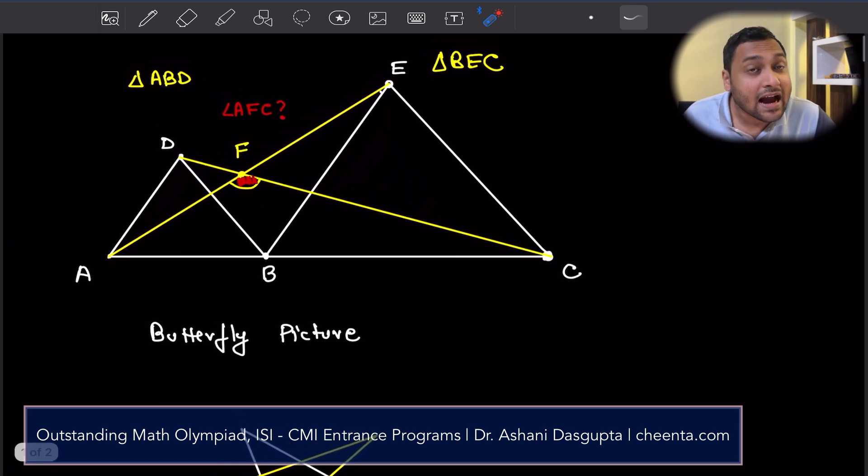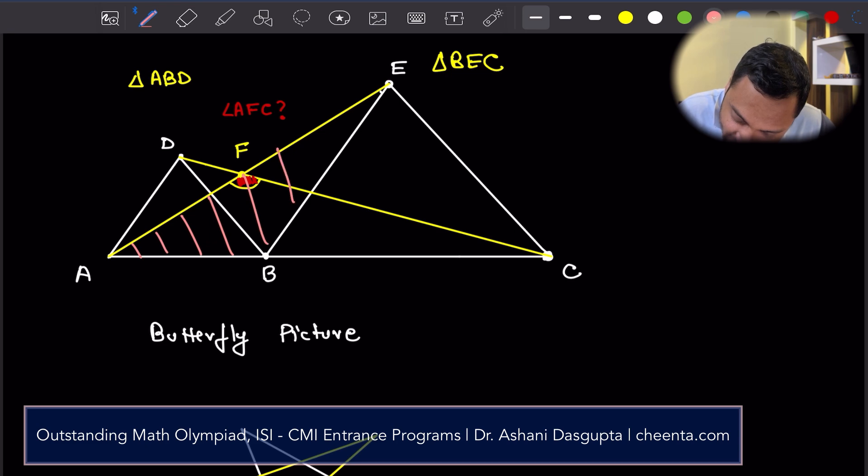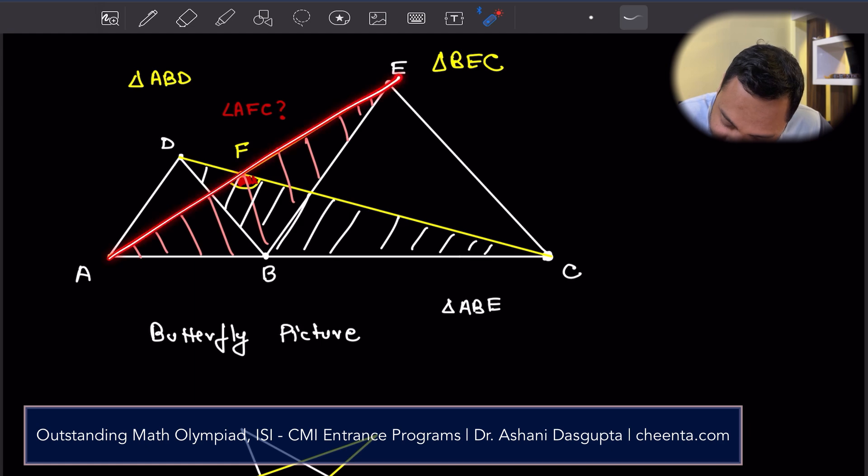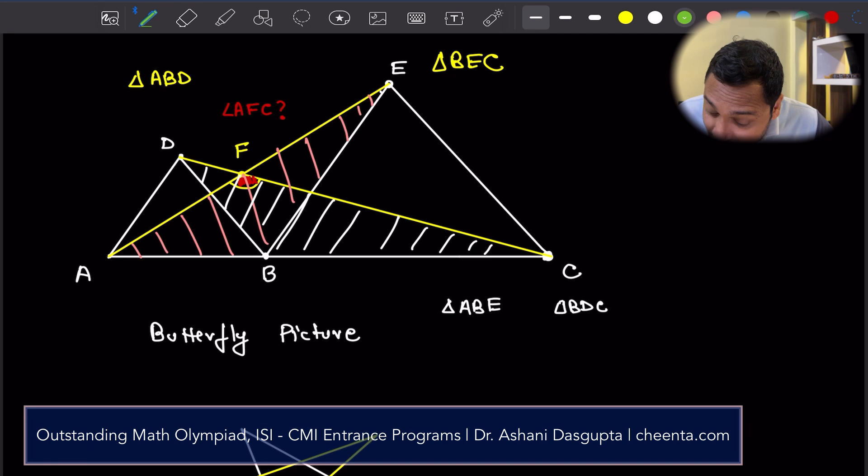So here also we have a butterfly picture. I'll draw it and you will immediately see. This is the first triangle. And this is the second triangle. So the two triangles that we will be comparing. Now notice that they are similar. The triangles are similar. Why?